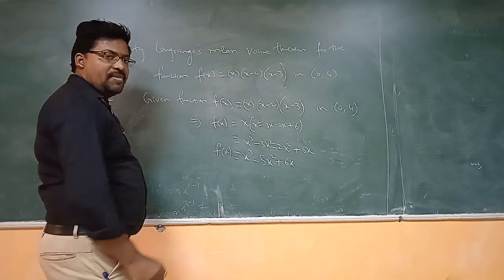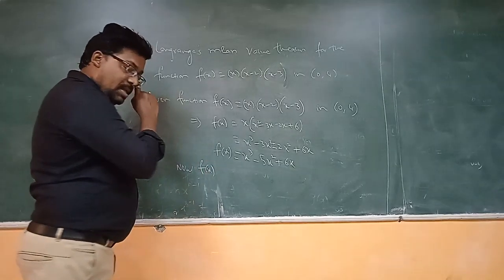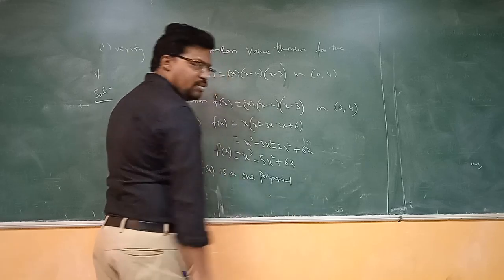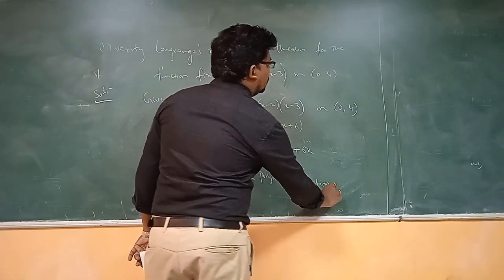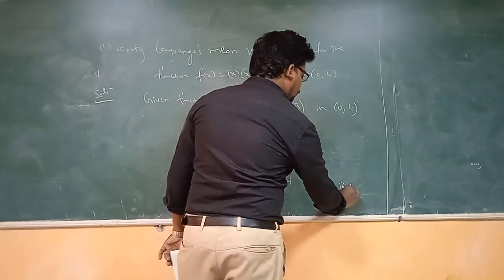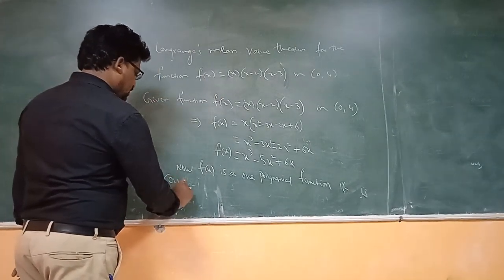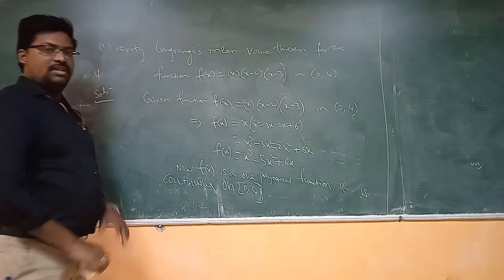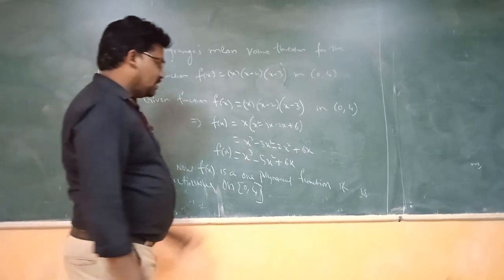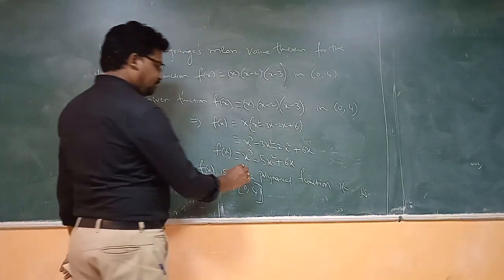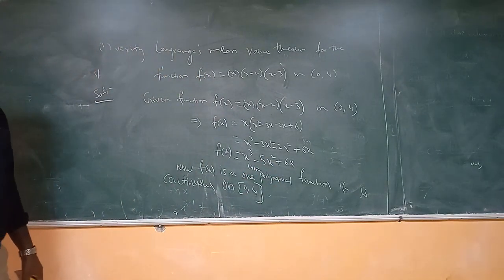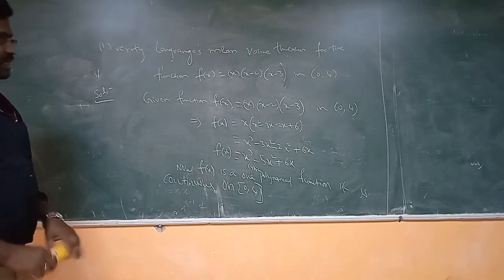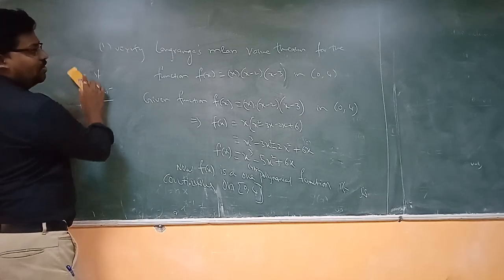Here f(x) is a polynomial function. Since f(x) = x³ − 5x² + 6x is a polynomial, it is continuous on the closed interval [0, 4]. The first condition is satisfied.